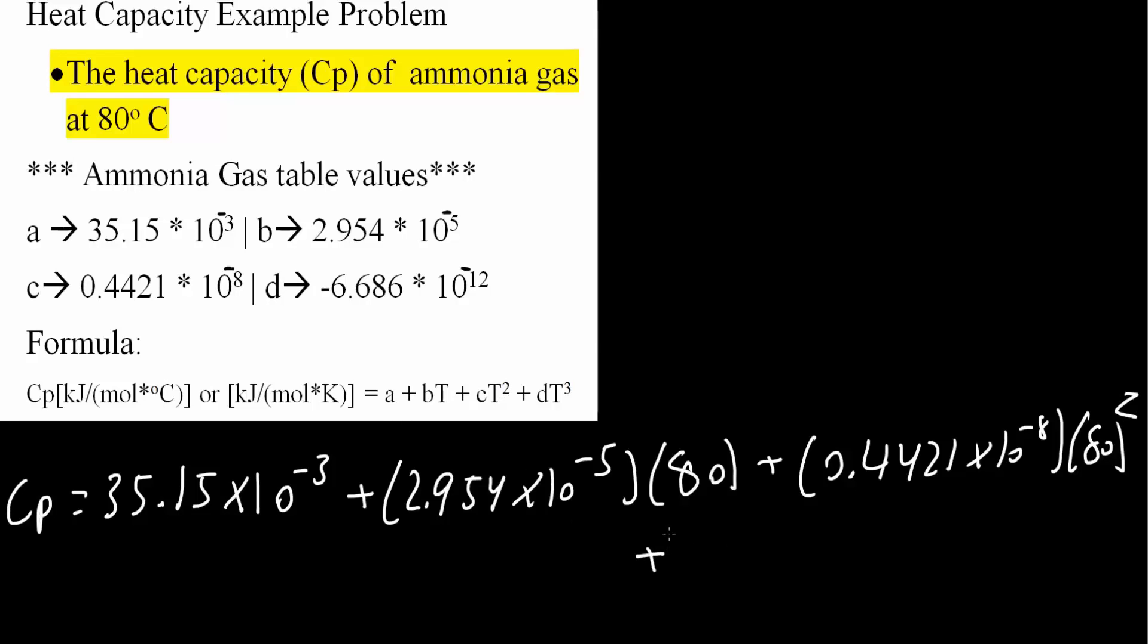Plus now D. D is negative 6.686 times 10 to the negative 12 and times the temperature which is 80 degrees Celsius. And we need to cube that.